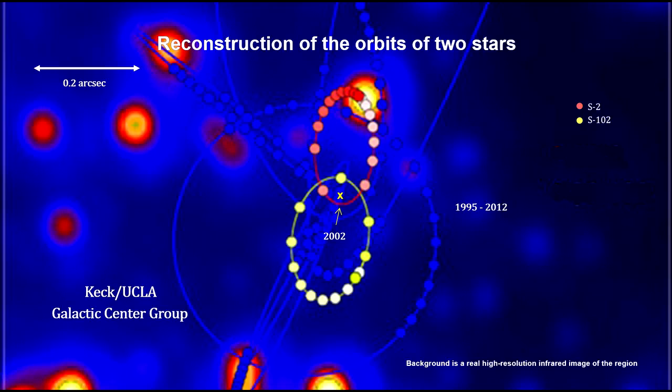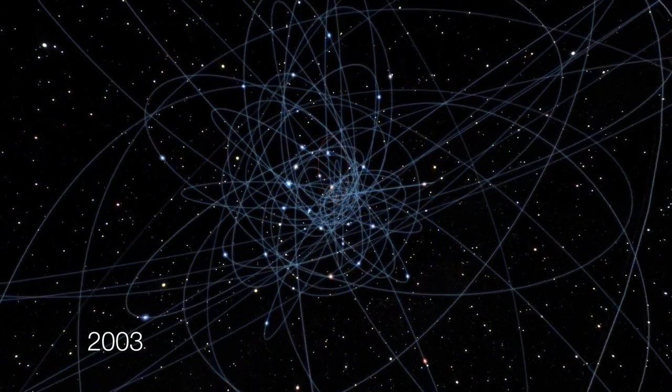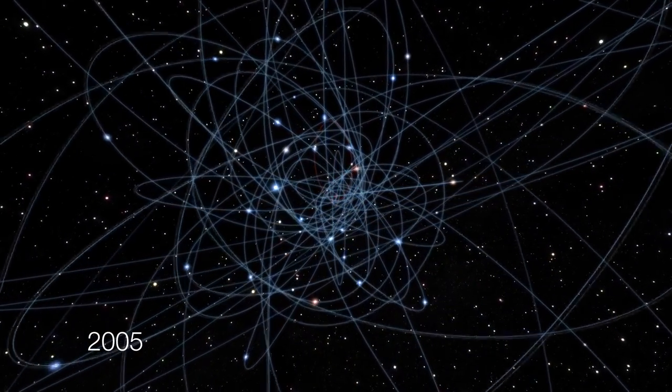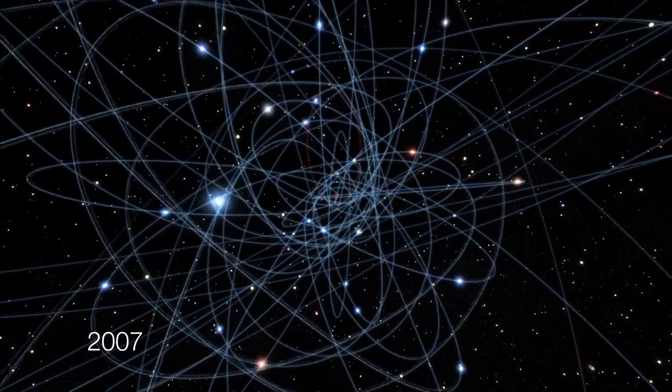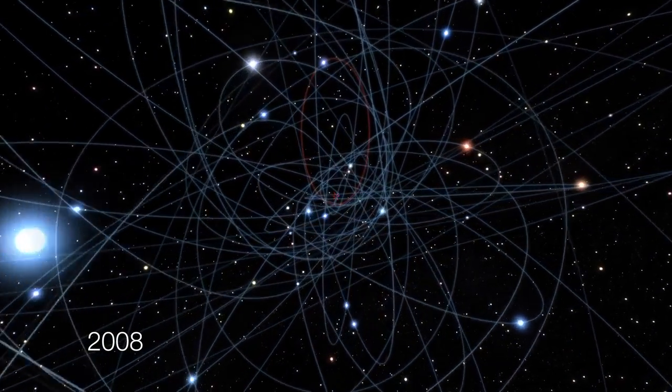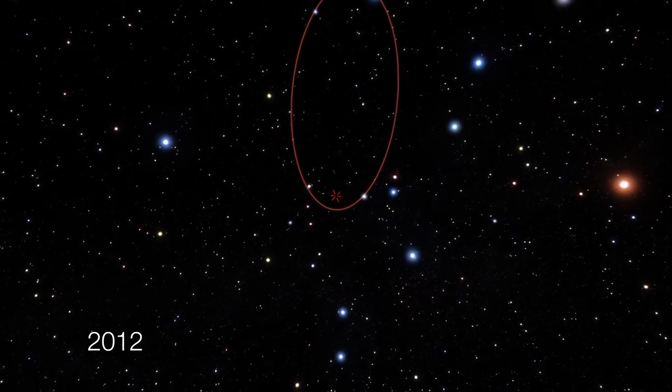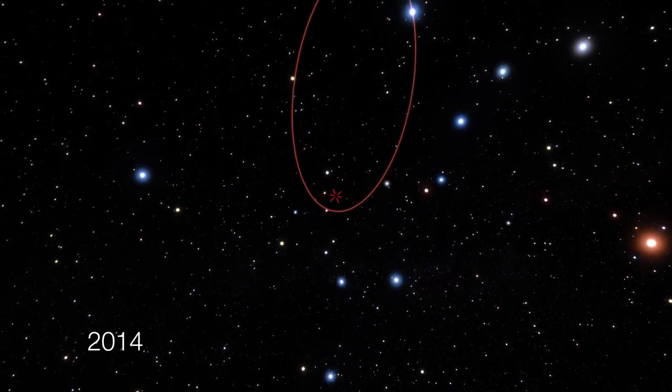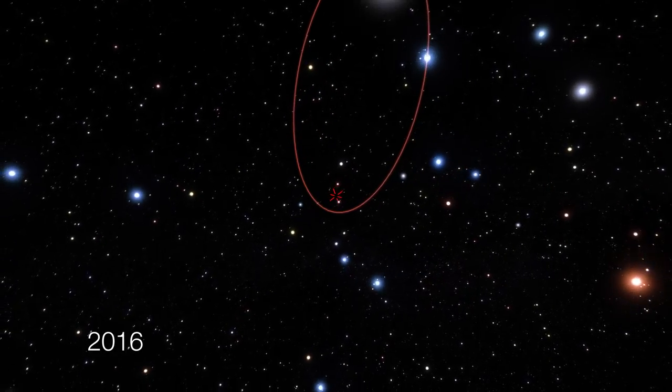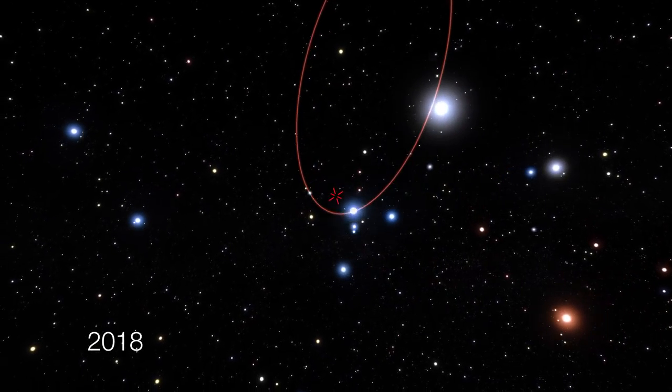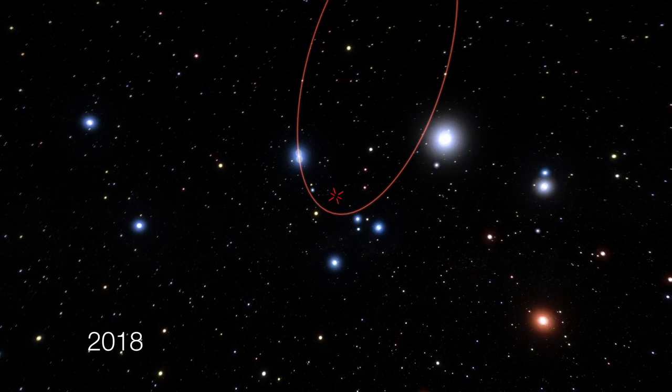500 years after Copernicus put the Sun at the center of our solar system, this team identified Sagittarius A-star as a supermassive black hole at the center of our galaxy. But we weren't done with S2. Its orbital period is 16 years. Following the 2002 passing, a major effort was mounted to upgrade ESO's Very Large Telescope Array to enable the precision needed to reveal the true geometry of space and time near this object and test Einstein's theory of general relativity.